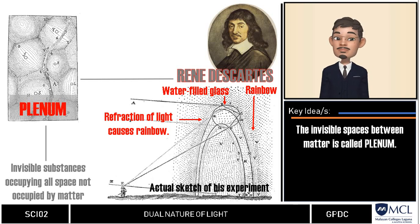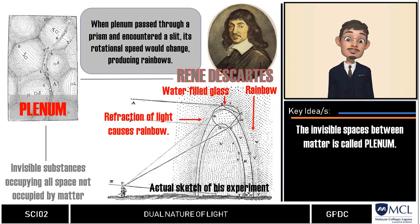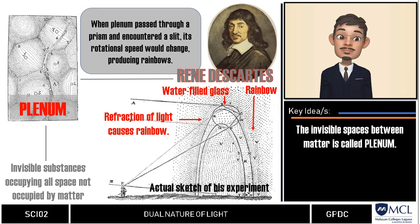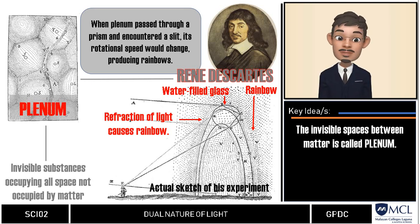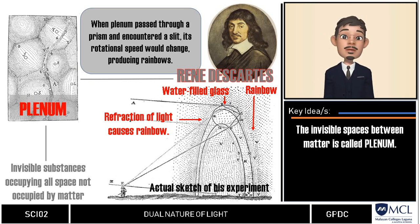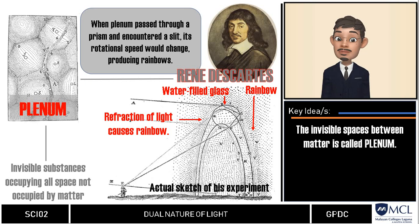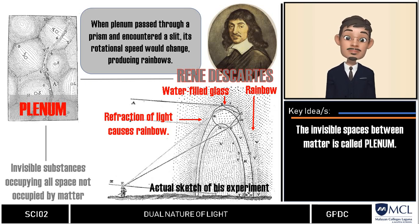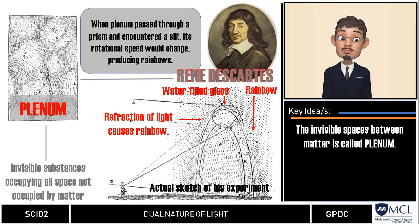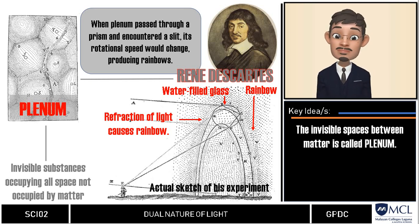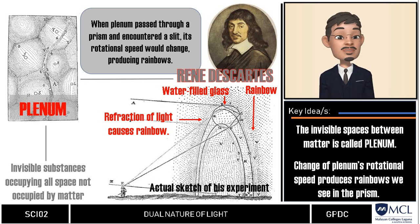Descartes noted that when these plenum particles passed through the prism and encountered a slit on the edge, their rotational speed would change. The rainbow in the prism was produced because of these differences in rotational speed of plenum particles. The free spaces that matter cannot occupy are filled by rotating spherical particles Descartes called plenum. When plenum passes through a prism, it changes speed at the slit on the edge, and this change of speed produces the colors of light — the rainbow we see in the prism.